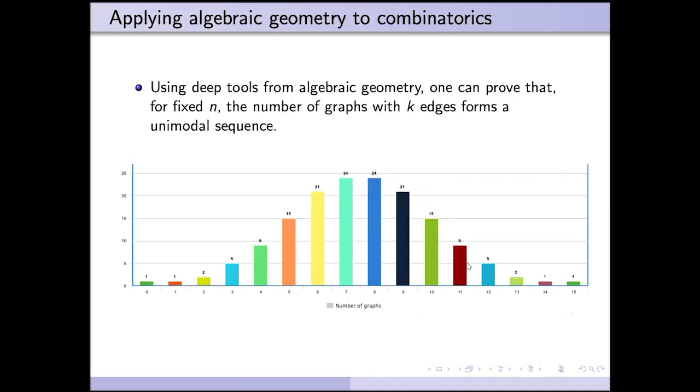The other thing that you can try to do is apply algebraic geometry to solve combinatorics problems. There are lots of simple-sounding combinatorics problems that people have no idea how to solve, and sometimes you can try to relate it to some problem in algebraic geometry and then use some deep tool from algebraic geometry to solve the problem.